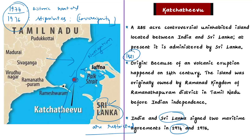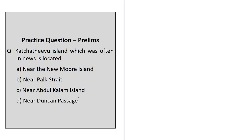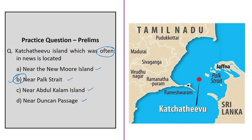However, Tamil Nadu fishermen who go fishing near the island are often arrested by Sri Lankan authorities, and the Tamil Nadu government often seeks retrieval of Katchatheevu and restoration of fishing rights of Tamil fishermen. For the practice question: Katchatheevu Island is located near Palk Strait — option B is the right answer. New Moore Island is located off the coast of West Bengal near the Sundarbans delta, Abdul Kalam Island is off the coast of Odisha, and Duncan Passage separates South Andaman Island from Little Andaman Island.